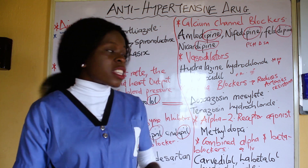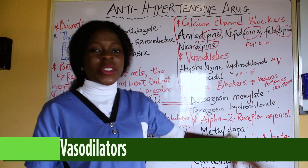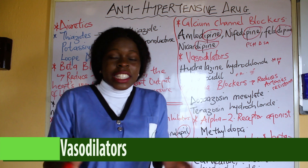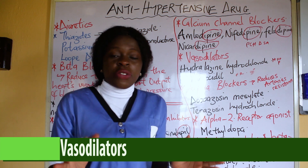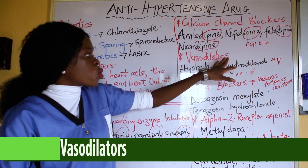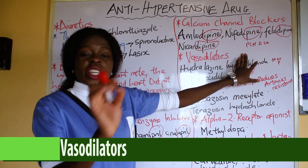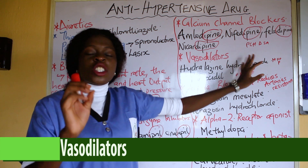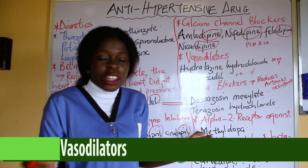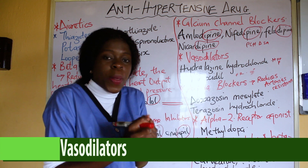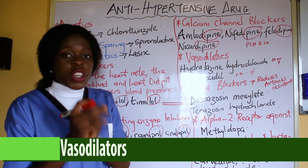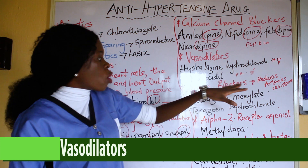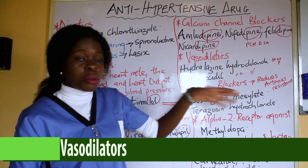Another class of drug is the vasodilators. As the name implies, they help to dilate the blood vessels and relax them. Vasodilators work on the walls and muscles of the blood vessels to ensure that they are dilated and not constricted or narrowed. Examples of vasodilators are hydralazine hydrochloride and also minoxidil.